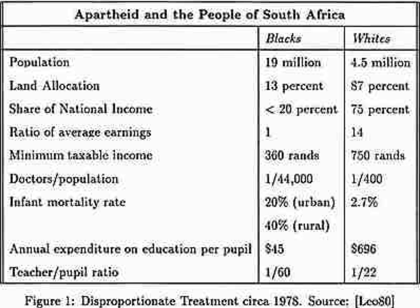From 1978 data: South Africa had 19 million blacks and only 4.5 million whites. That 19 million controlled only 13% of the land, while 4.5 million whites controlled 87%. Blacks received less than 20% of national income — for every dollar a black person made, a white person made 14. There was one doctor for every 44,000 black people, but one doctor for every 400 white people. As a result, the infant mortality rate was 20% in urban black areas and 40% in rural areas, compared to 2.7% among whites.